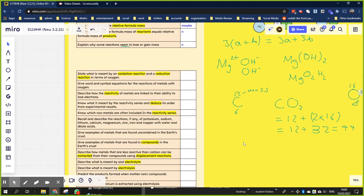So for example, iron reacts with oxygen and produces iron oxide. So that would be an oxidation reaction. Iron plus oxygen produces iron oxide. That would be an oxidation reaction.